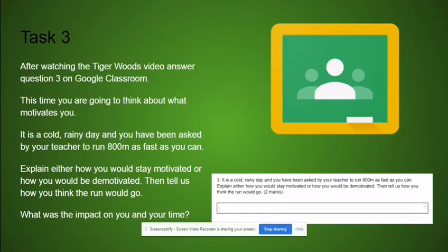After watching the video, you're going to answer question three. In question three, you're going to think about yourself and not about Tiger Woods. The scenario will be it is a cold, rainy, miserable day and you have been asked by your teacher to run 800 metres as fast as you can. You have to explain how you would stay motivated or how you would be demotivated by the situation. You need to make sure you tell us how you think the run would go, what was the impact on your performance and your time.